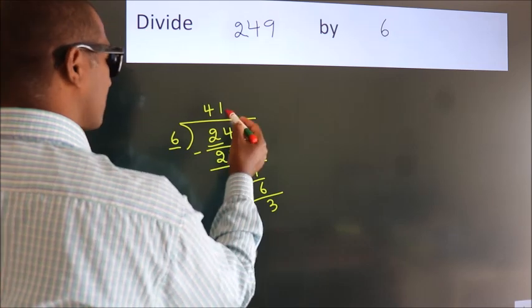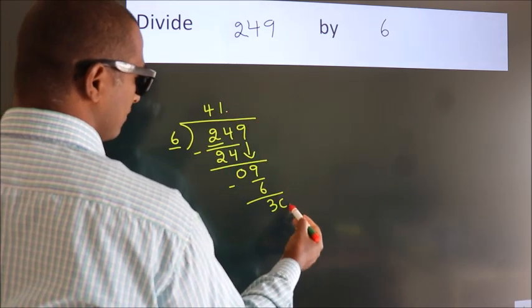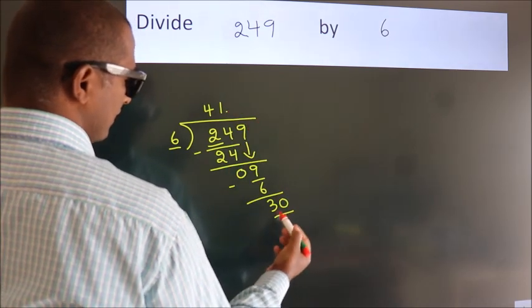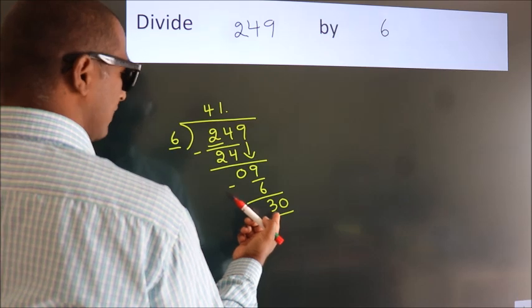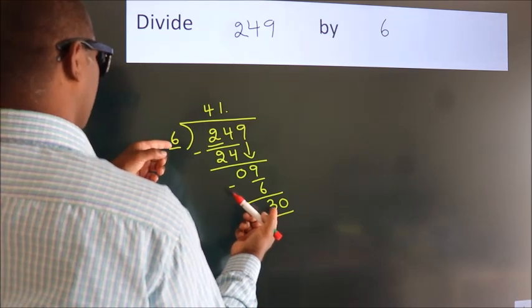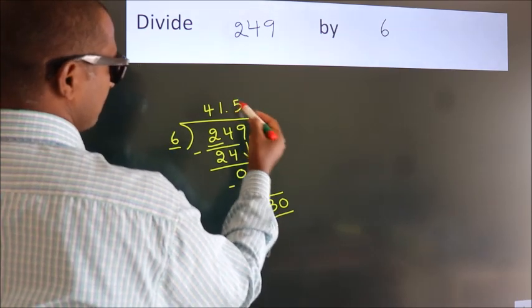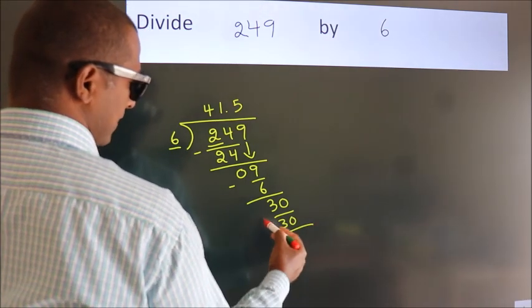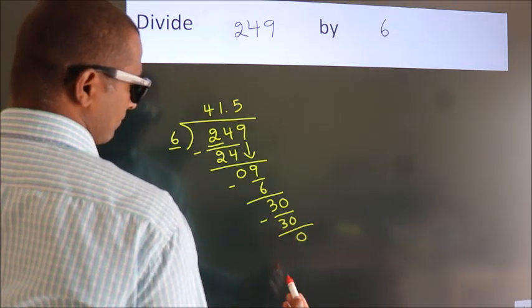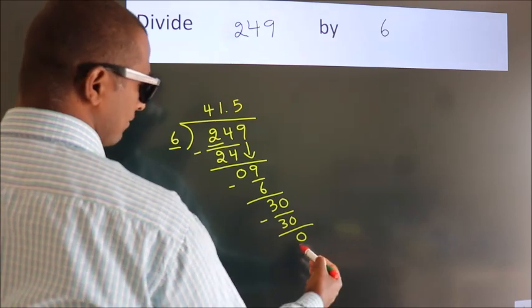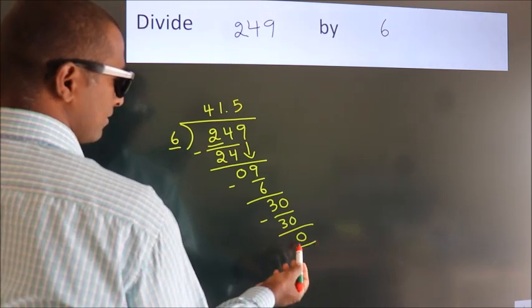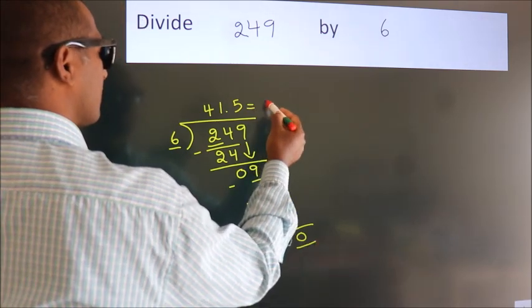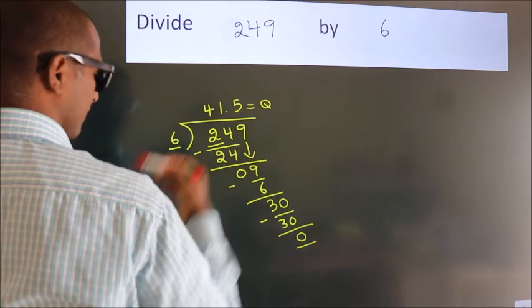So what we do is we put dot, take 0, so 30. When do we get 30 in 6 table? 6 fives 30. Now we subtract, we get 0. Here we got remainder 0, so this is our quotient what we're looking for.